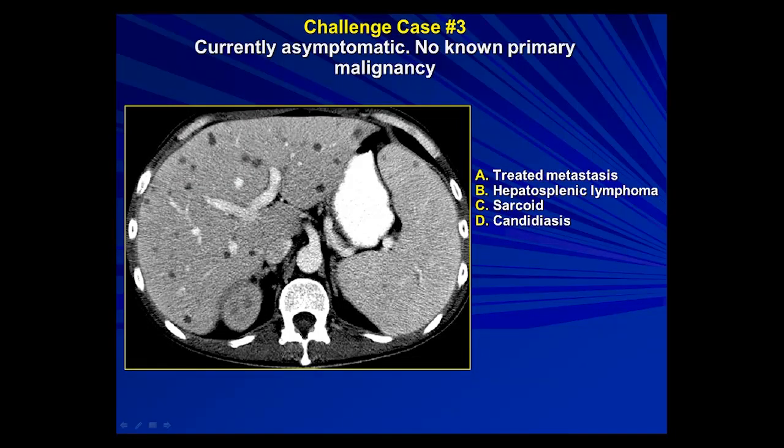Challenge case number three is a patient who is asymptomatic, no known primary malignancy. One cut showing some lesions in the liver and spleen. Differential: treated mets, lymphoma, sarcoidosis.